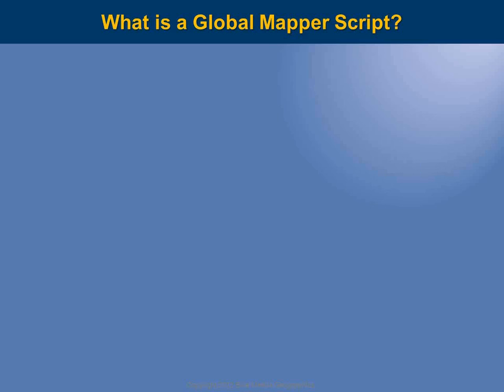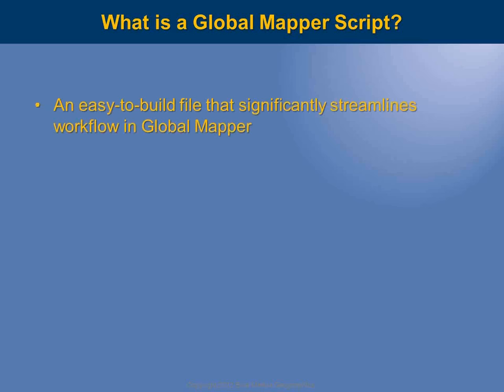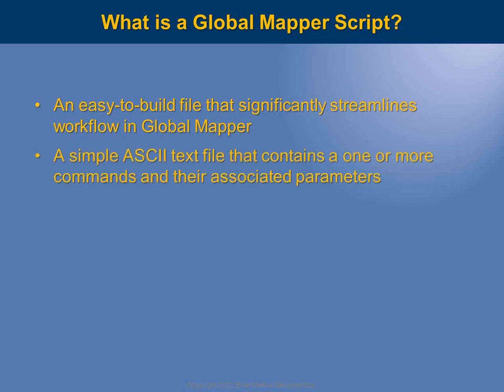So, first question: what is a Global Mapper script? At its most basic level, it is an easy-to-build file that can significantly streamline your workflow in Global Mapper. More specifically, it is a text file. We're often asked what the format of our scripting language is — it's text, a simple text file, and this text file contains one or more commands and their associated parameters.